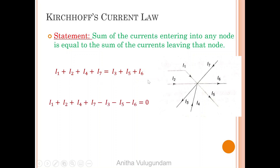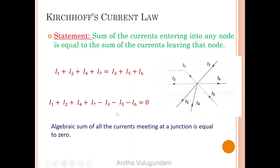Alternately we can write it this way: the algebraic sum of all currents meeting at a junction is equal to zero.